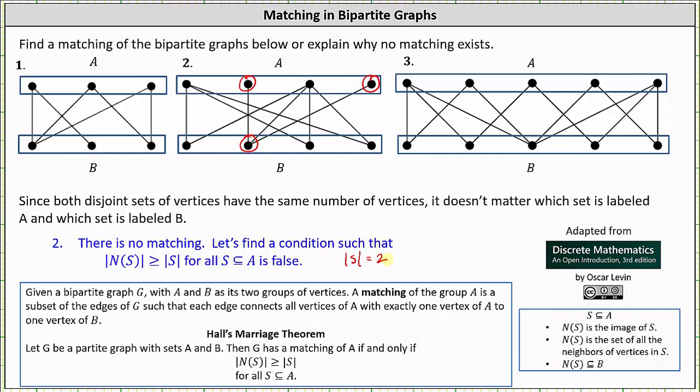N of S is the set of neighbors of S or the set of vertices that are adjacent to at least one of the vertices in set S. In this case, N of S is just the second vertex, the single vertex circled in set B. This indicates the cardinality of N of S is equal to one. And notice one is not greater than or equal to two, which is why the condition that must be true to have a matching is false.